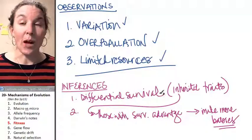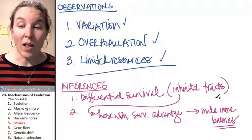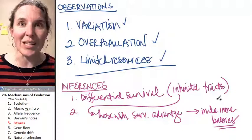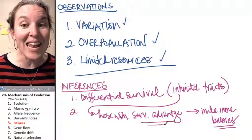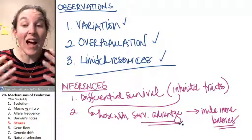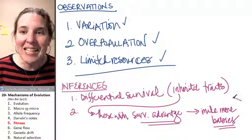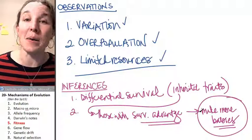Now, not all of them are going to survive. They all have different characteristics, but those inherited characteristics that give them an advantage, a survival advantage means they're more likely to make babies.